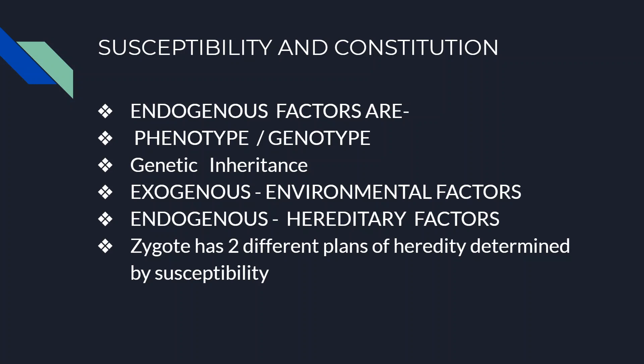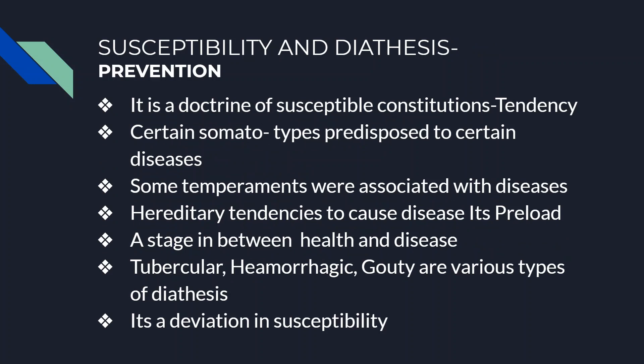Exogenous factors are environmental factors and endogenous factors are hereditary factors. The zygote has two different plans of hereditary information from the parent, and this is determined by susceptibility. Thus, homeopathic remedies are helpful in preventing the development from the stage of diathesis to the disease state.